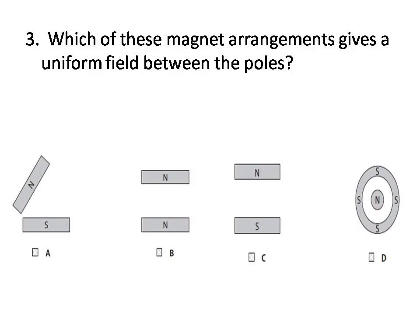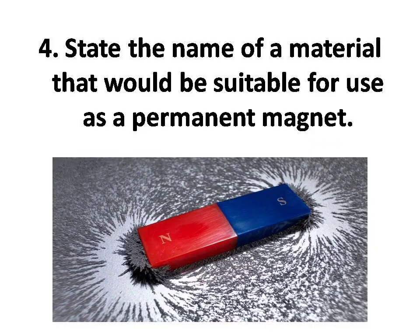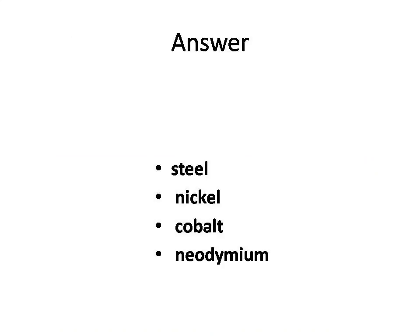Question number three. Which of these magnet arrangements gives a uniform field between the poles? Answer is option C. Question number four. State the name of a material that would be suitable for use as a permanent magnet. The answers are: steel, nickel, cobalt, neodymium.